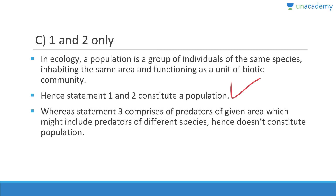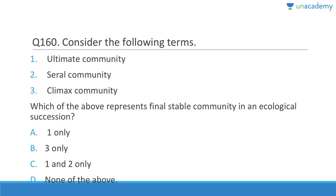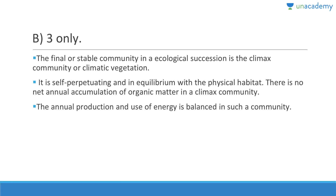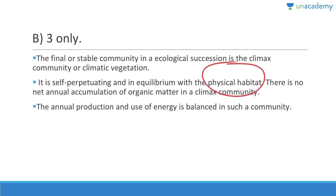The final stable community in an ecological succession is the climax community — answer B, three only. The climax community is self-perpetuating and in equilibrium with the physical habitat. There is no net annual accumulation of organic matter in a climax community; annual production and use of energy are balanced.